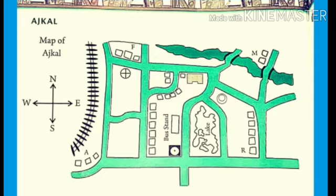When you face the rising sun, the East is in front of you, the West is behind you, the North is to your left, and the South is to your right. But in a map, North is usually at the top and South is at the bottom.